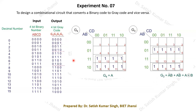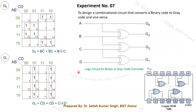Similarly, constructing the Karnaugh maps for G2 and G1 gives G2 = B XOR C and G1 = C XOR D. So the complete circuit can be realized using just XOR gates: G4 = A, G3 = A XOR B, G2 = B XOR C, G1 = C XOR D. This generates the equivalent gray code from binary.